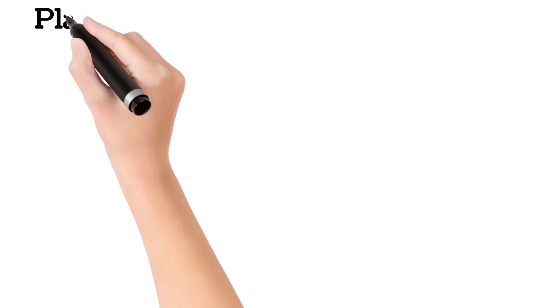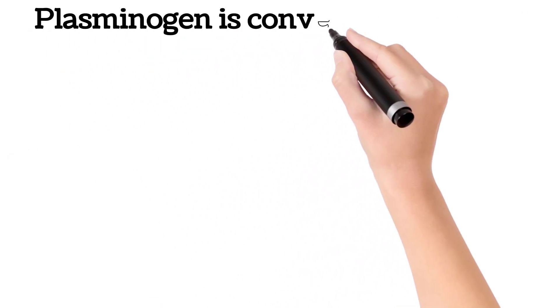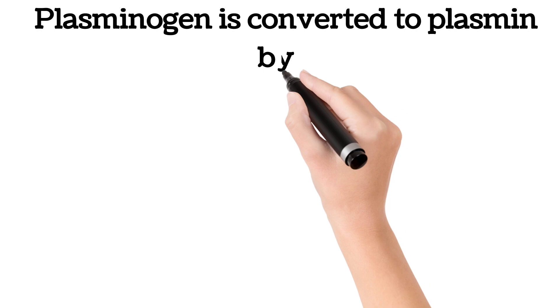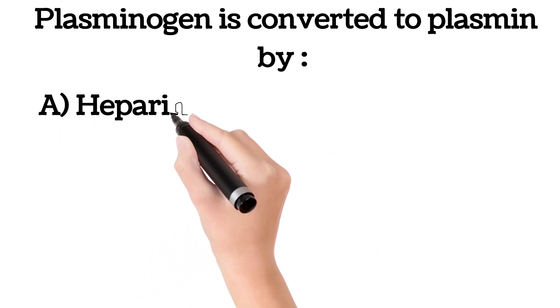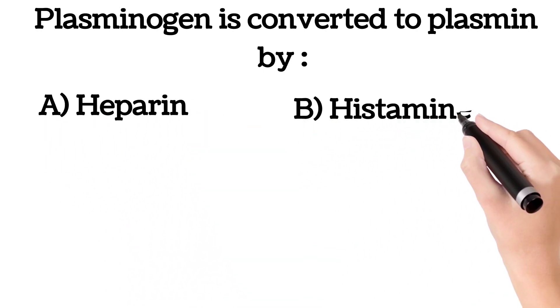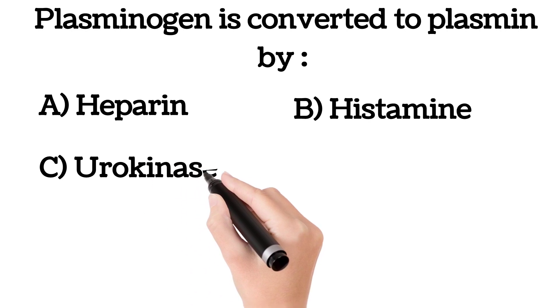Plasminogen is converted to plasmin by: A. Heparin, B. Histamine, C. Urokinase, D. Serotonin.